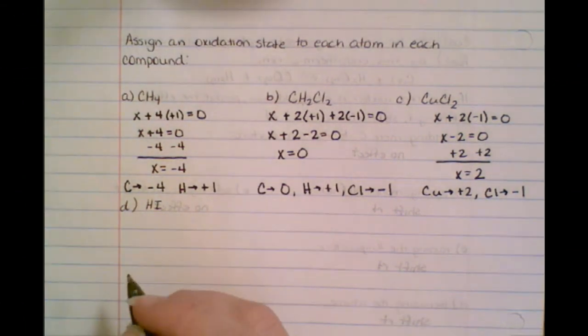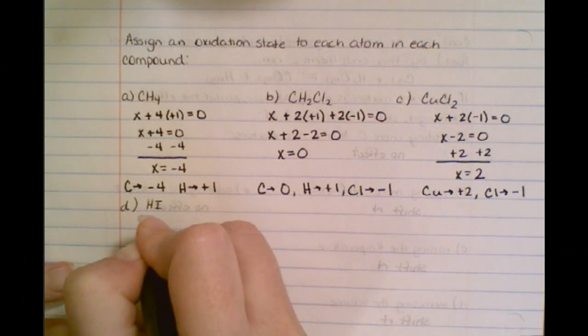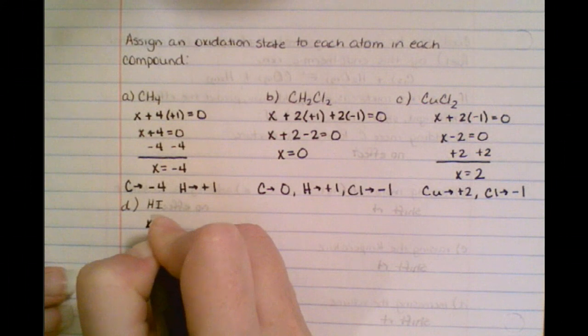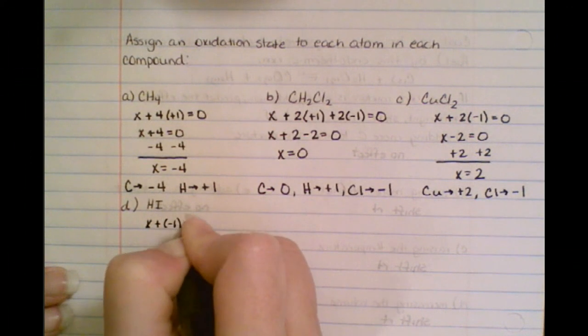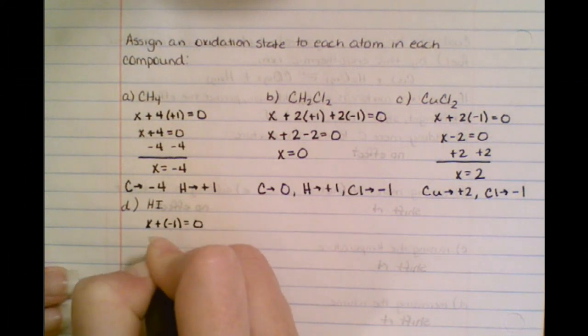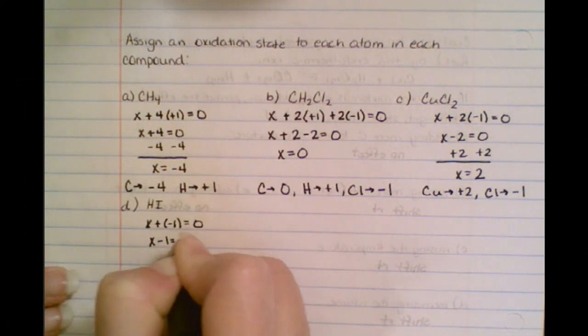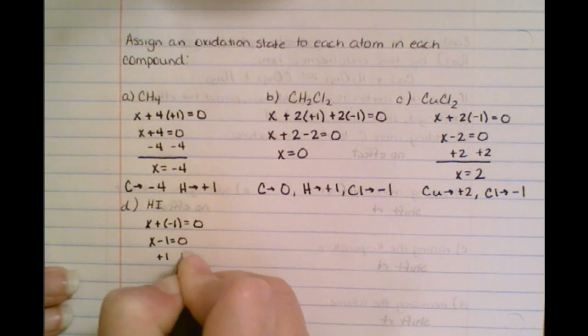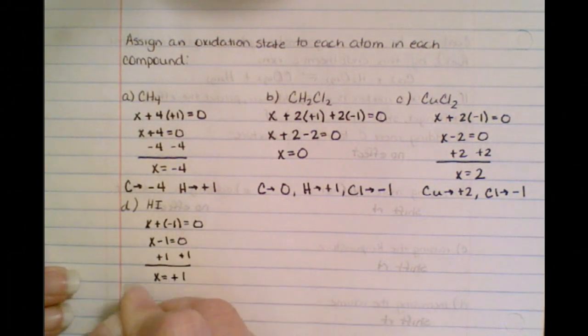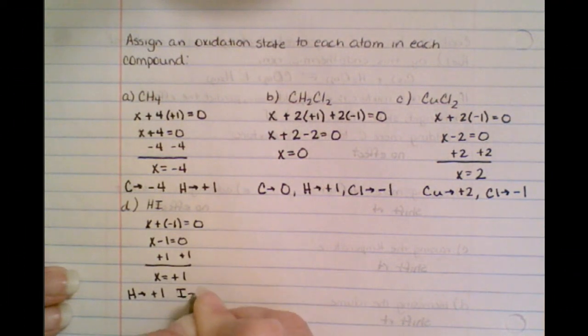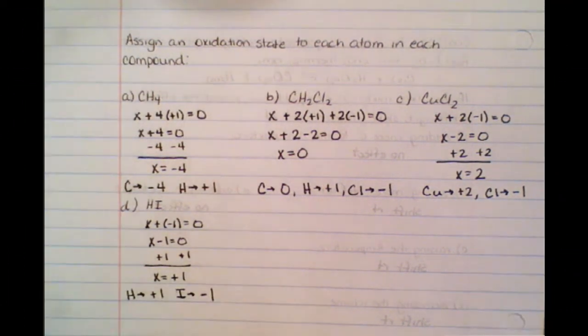So now we've got some HI going on. I know that H, I'm not really sure. I'm supposed to figure it out. I know that I is always a minus one. So I'm going to get x minus one equals zero. I'm going to add one both sides, and I'm going to get that x equals plus one. Now, as you know, I kind of hesitated too, so if you wanted to just write it out to begin with, I'm okay with that. No problem.